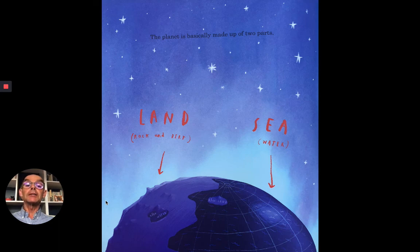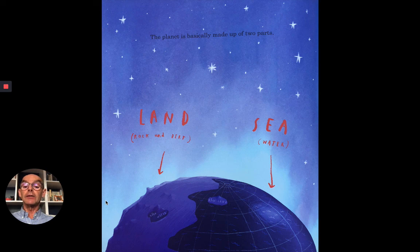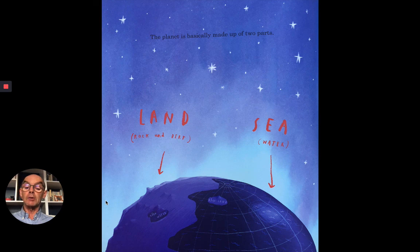The planet is basically made up of two parts. There's the land, which is rock and dirt, and the sea, which is water. Sometimes in the sea there's a little island, which is also land. And sometimes on the land there's a lake, which is also water.